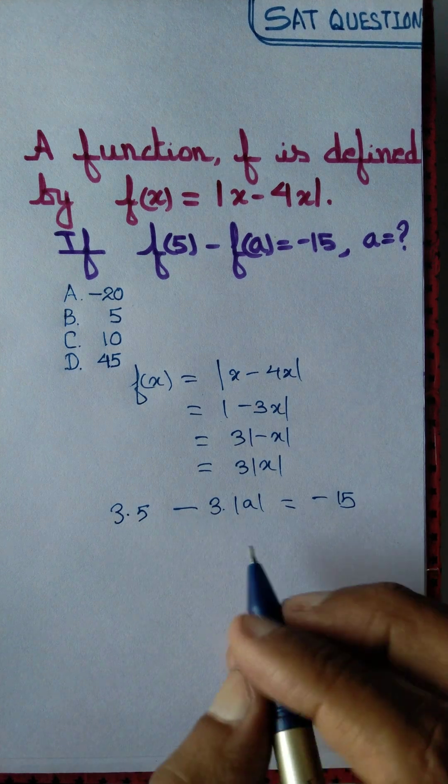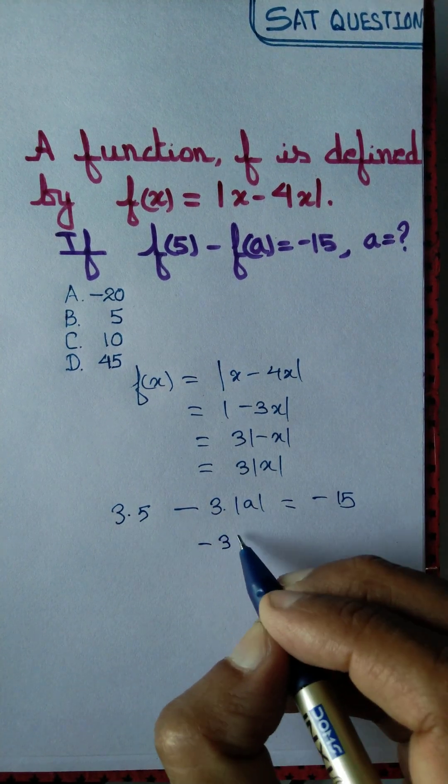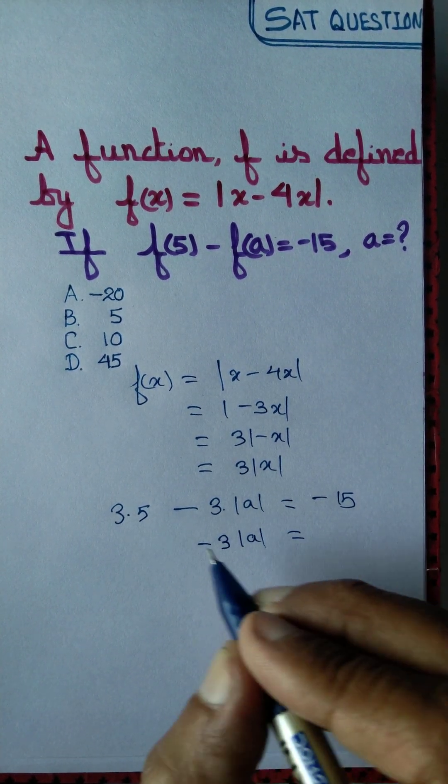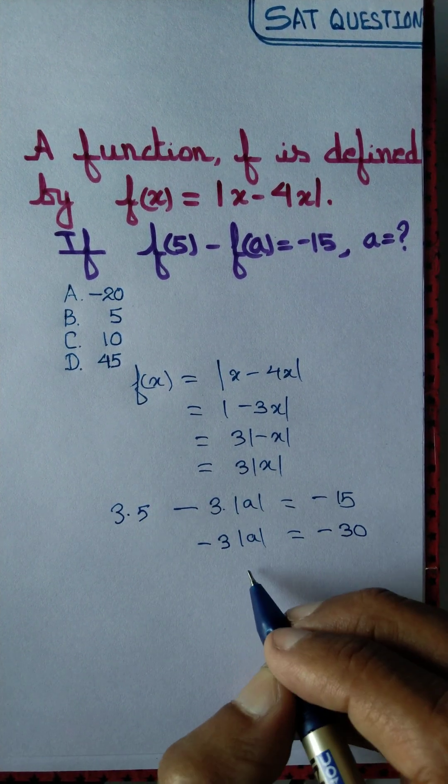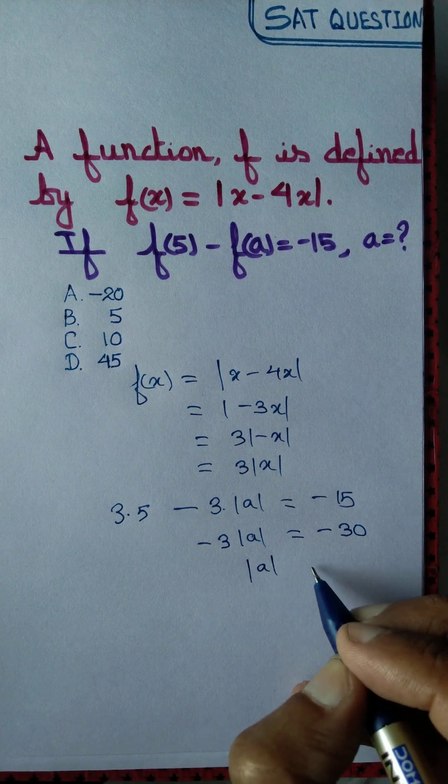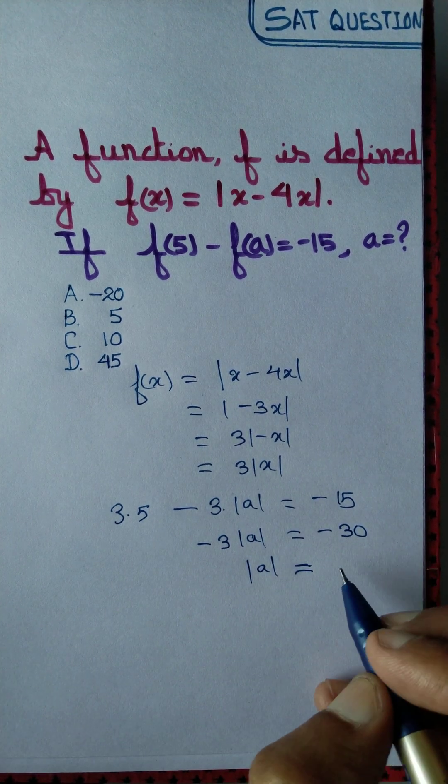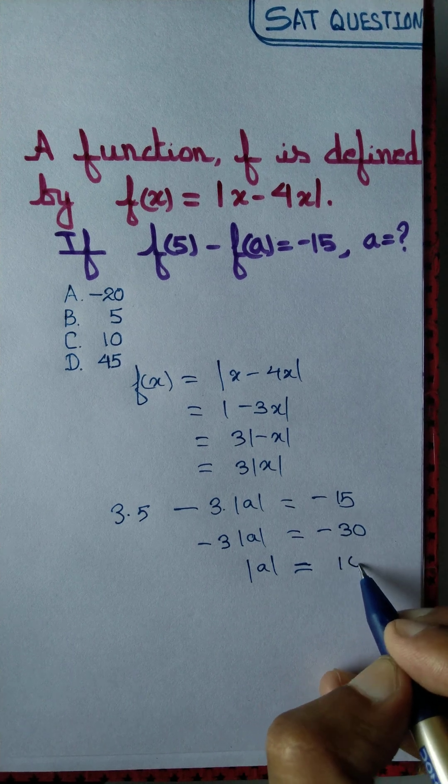Let's take the number to the right-hand side to obtain 3 times modulus of a equal to minus 15 and minus 15, that is minus 30. We can cancel the negative out. We can cancel 3 out as well and say that modulus of a has to be equal to 10.